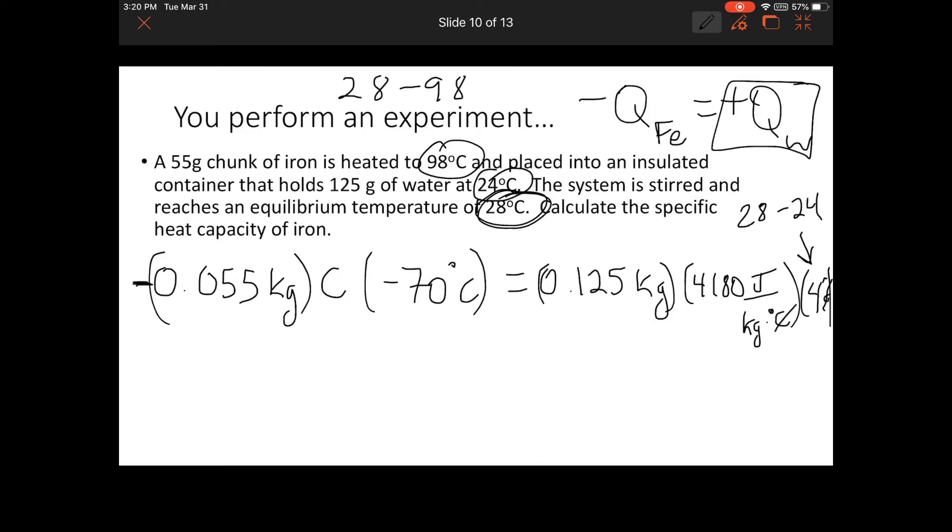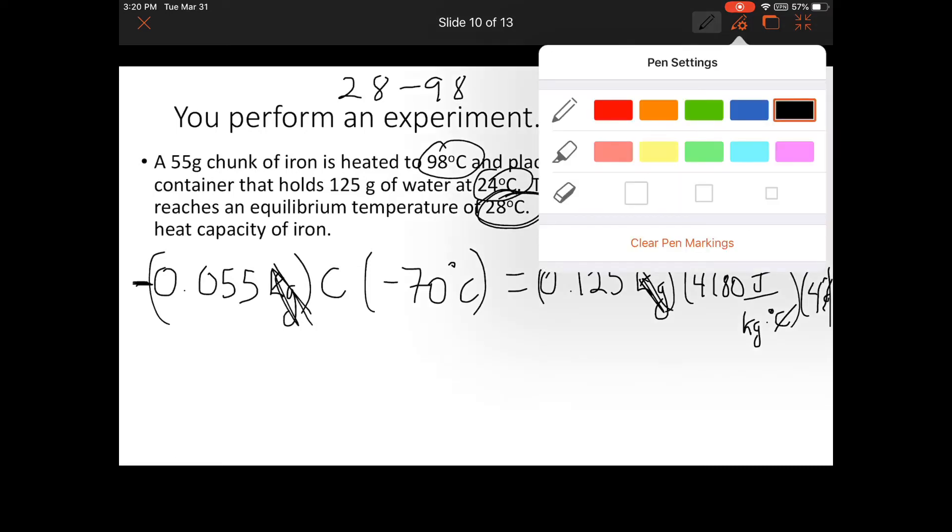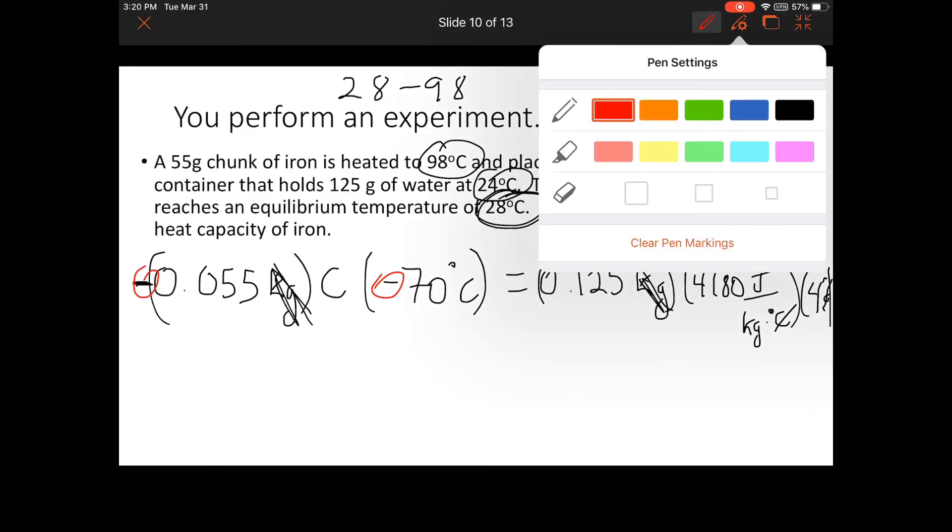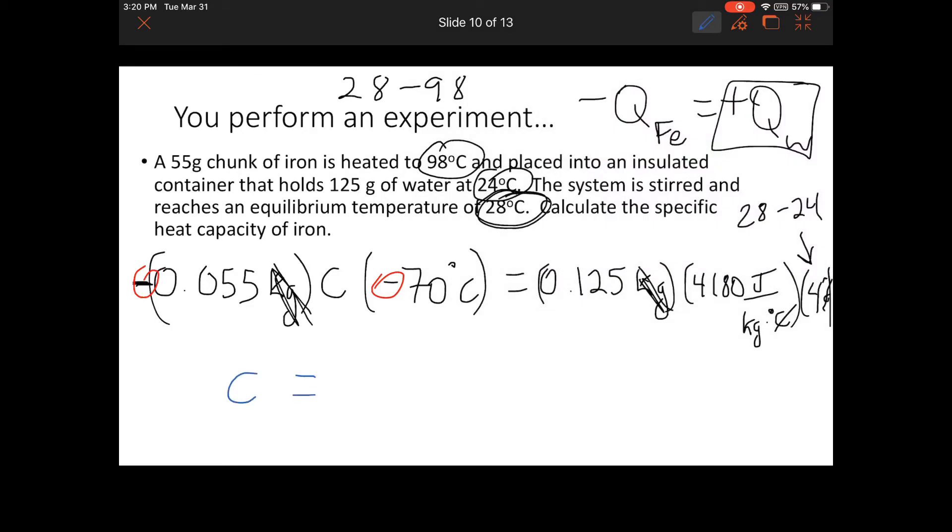Celsius cancels, kilograms cancel, and now I'm solving this problem. These negatives cancel out, so you always have a positive value for C. Let me simplify. Rearranging, C equals 0.125 times 4180 times 4, which gives me 2090 joules.